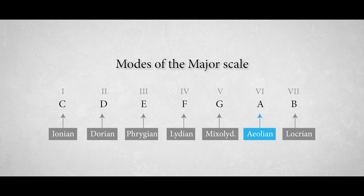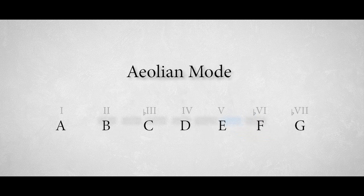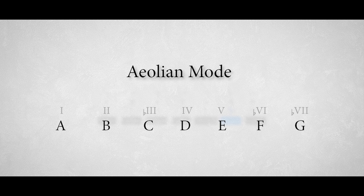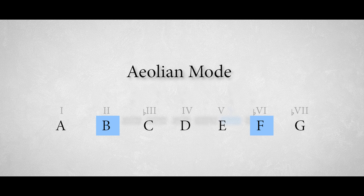The Aeolian mode has been used many times in pop music and is often called the natural minor scale, or simply the minor scale. The flattened sixth in combination with the major second degree is probably what sets it apart from the other minor modes.